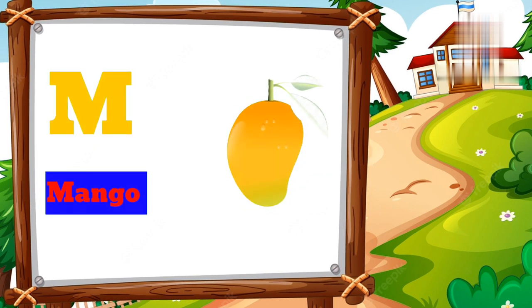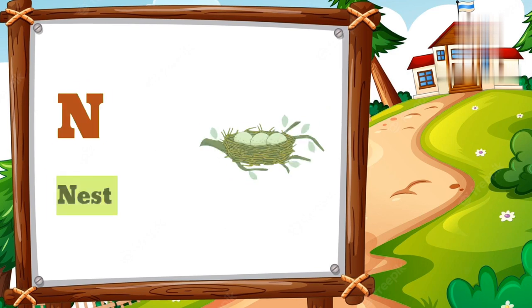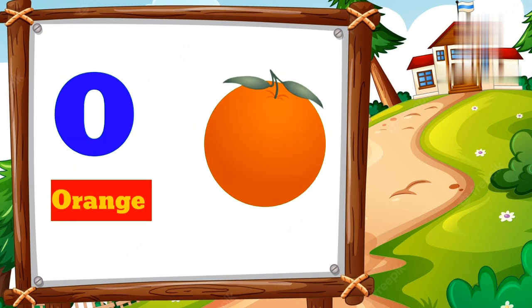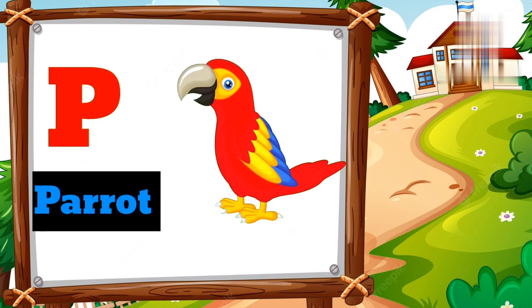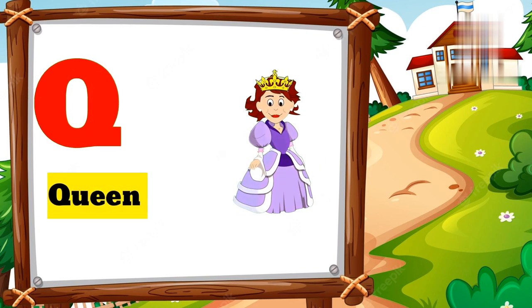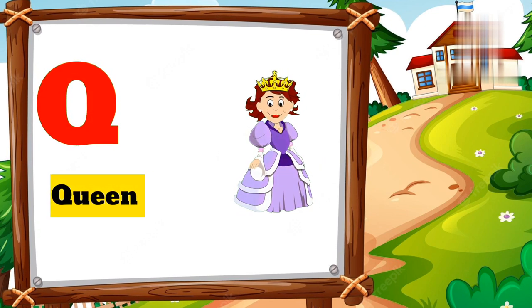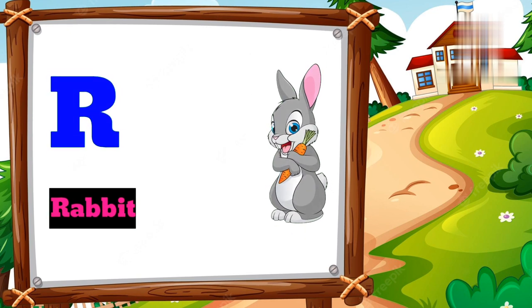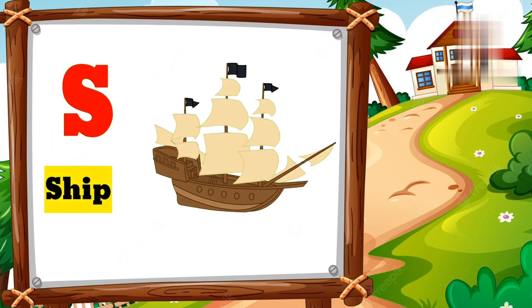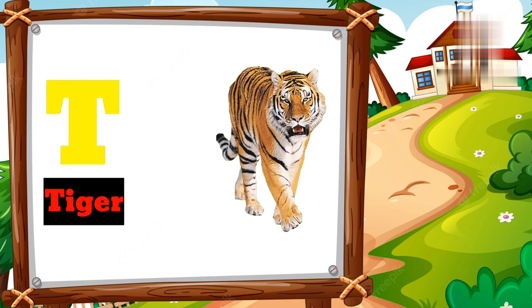M for mango. N for nest. O for orange. P for parrot. Q for queen. R for rabbit. S for sheep. T for tiger.